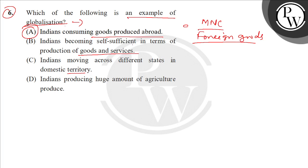India becoming self-sufficient in terms of domestic goods — this is not globalization. It is a closed economy type. You are producing domestic goods. This is domestic, this is not globalization.